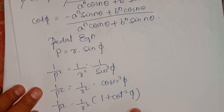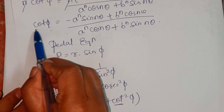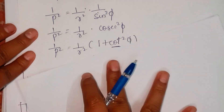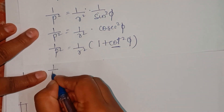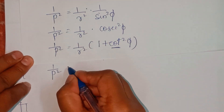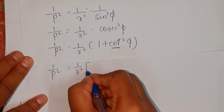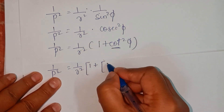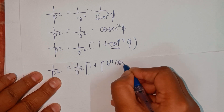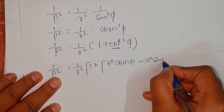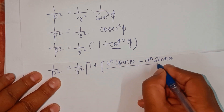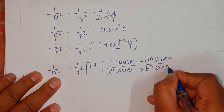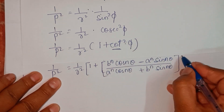We substitute the cot(φ) value into the expression. So 1/p² = (1/r²)·[1 + ((b^n·cos(nθ) − a^n·sin(nθ)) / (a^n·cos(nθ) + b^n·sin(nθ)))²]. This gives us a combined fraction with the numerator being (a^n·cos(nθ) + b^n·sin(nθ))² + (b^n·cos(nθ) − a^n·sin(nθ))² all divided by (a^n·cos(nθ) + b^n·sin(nθ))².